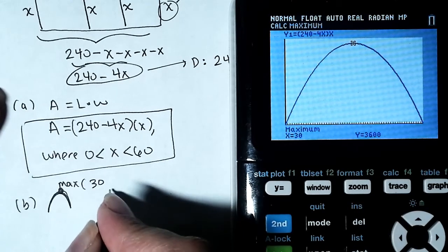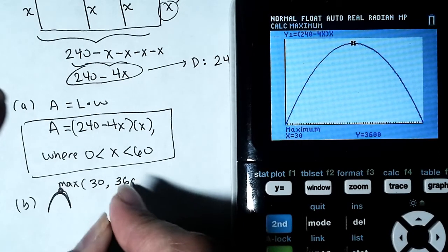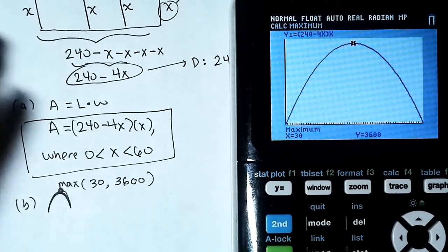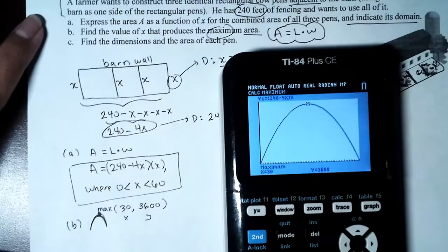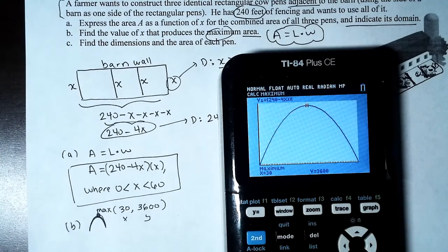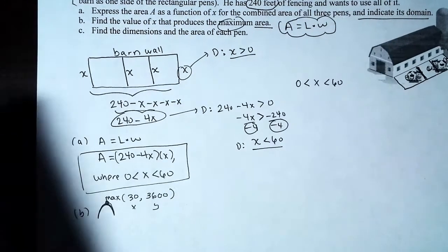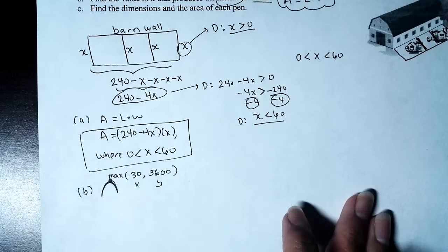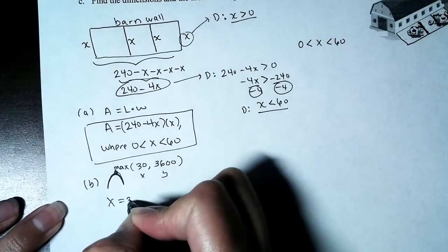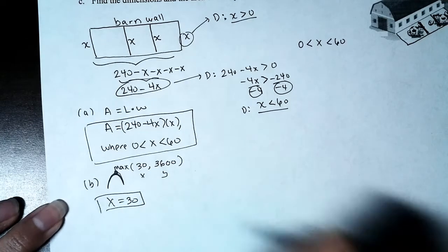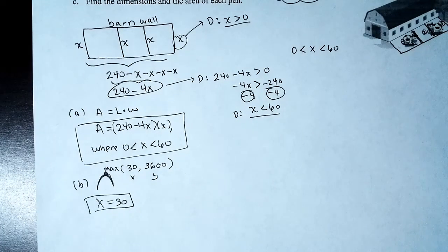The maximum point is at x = 30, y = 3600. To answer Part B: the value of x that produces the maximum area is x = 30.